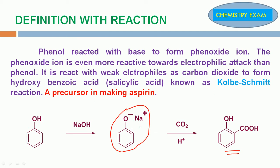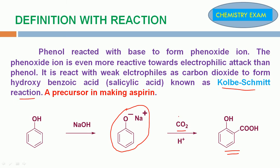This phenoxide ion reacts with weak electrophile like carbon dioxide to form hydroxybenzoic acid. It is known as Kolbe-Schmidt reaction. Next, we are going to discuss the mechanism.